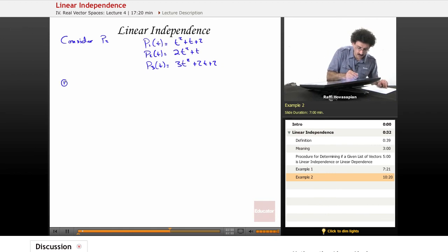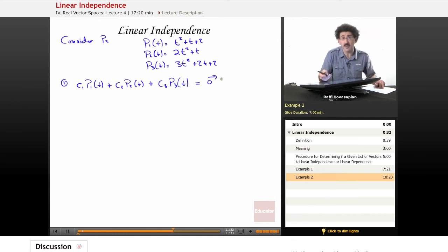Well, do what we do. We set up equation one, which is the following. We take arbitrary constants, C1 times P1(t) plus C2 times P2(t). We'll write everything out here. We want things to be as explicit as possible.